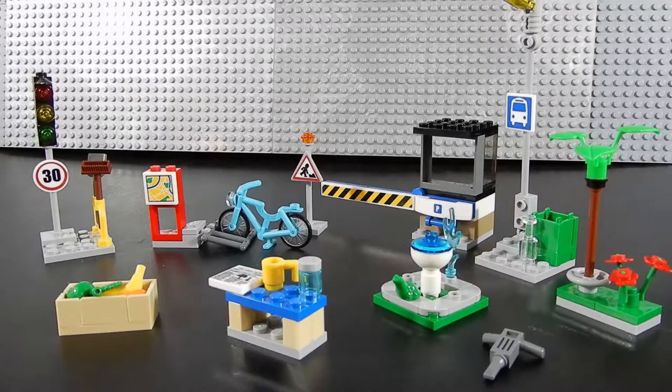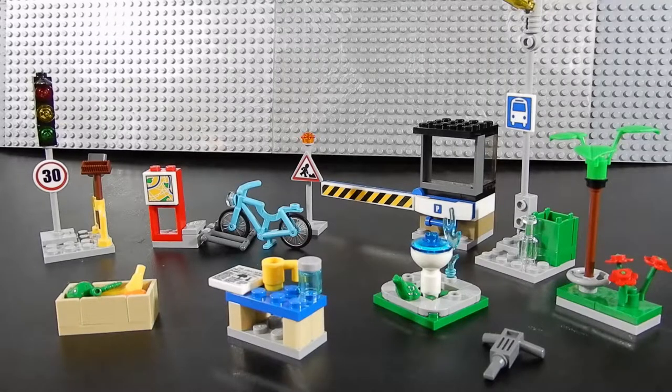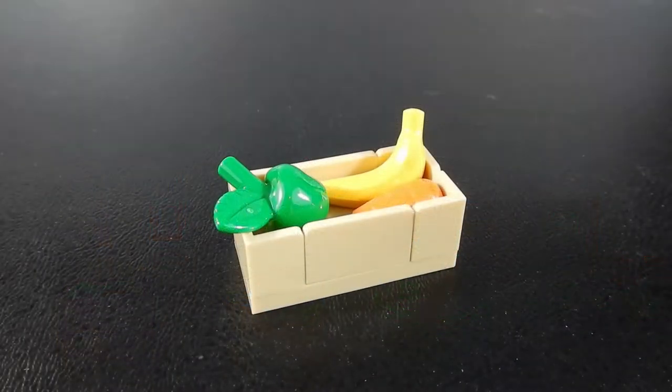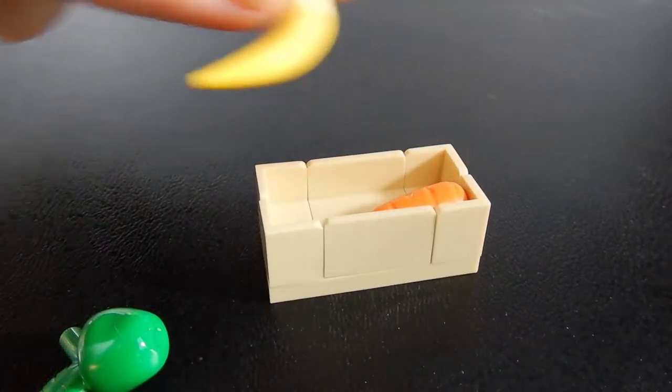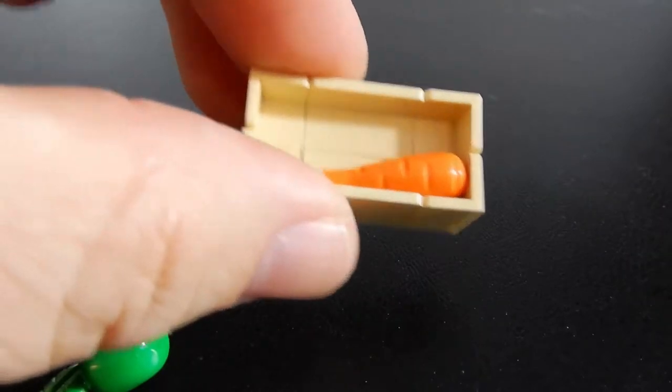Alright, here we have all the assembled components. Let's go ahead and take a look at each of these one by one. First off we have a little produce crate and inside we have a green apple, a banana, and a carrot.